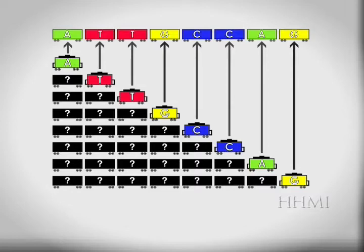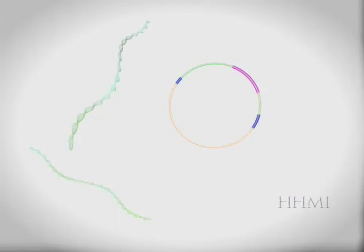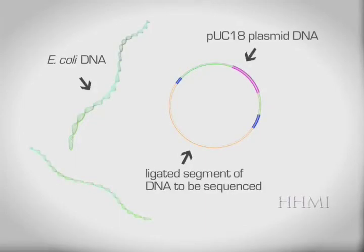But how do we determine where the copying begins? What is preventing us from copying a portion of the plasmid or the E. coli DNA which is also floating around in the same solution?